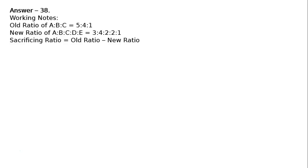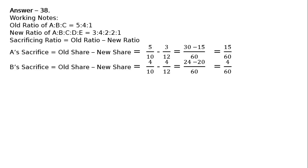Sacrificing ratio equals old ratio minus new ratio. A's sacrifice is old share minus new share: 5/10 minus 3/12, LCM 60, equals 30 minus 15 equals 15/60. B's sacrifice is 4/10 minus 4/12, equals 24 minus 20 equals 4/60. C's is 1/10 minus 2/12, equals 6 minus 10 equals minus 4/60. This means C is gaining. C's capital account has to be debited for goodwill.